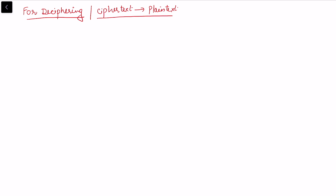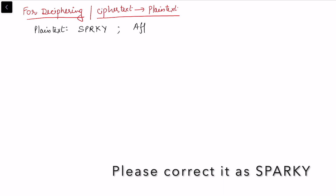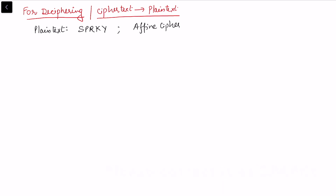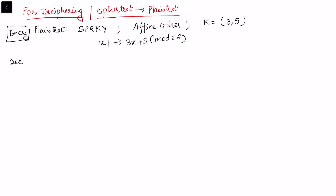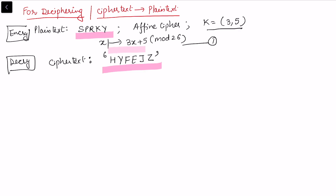Now we look at the reverse process — deciphering, or going from cipher text to plain text. We already know the plain text was 'sparky', the technique is affine cipher, and the key is (3, 5). The encryption used c ≡ 3x + 5 mod 26. Now suppose we have access only to the cipher text H, Y, F, E, J, Z and want to recover the plain text.